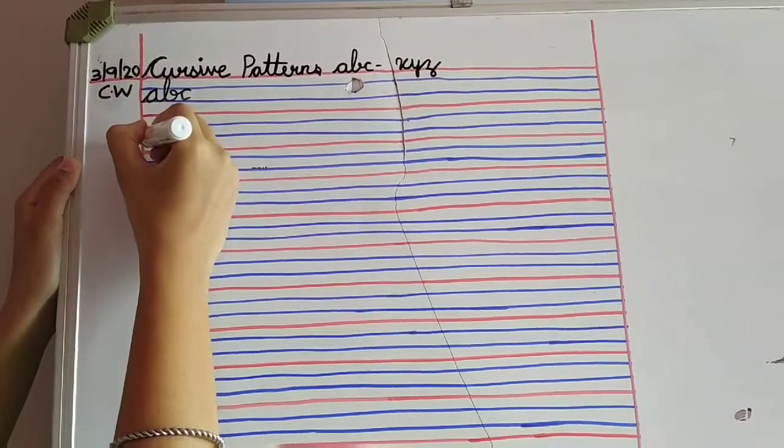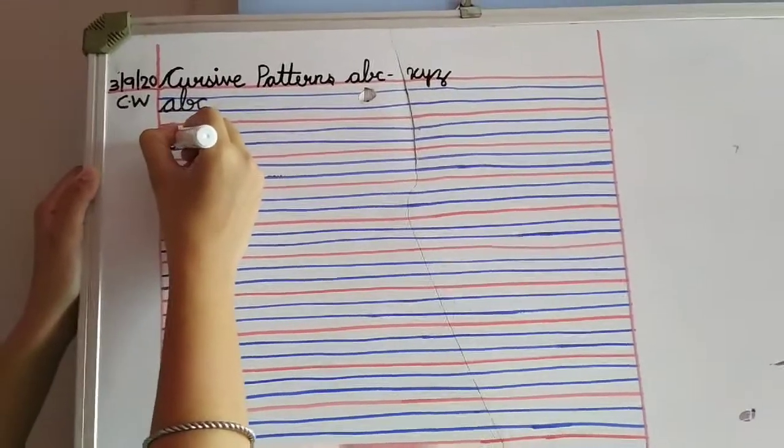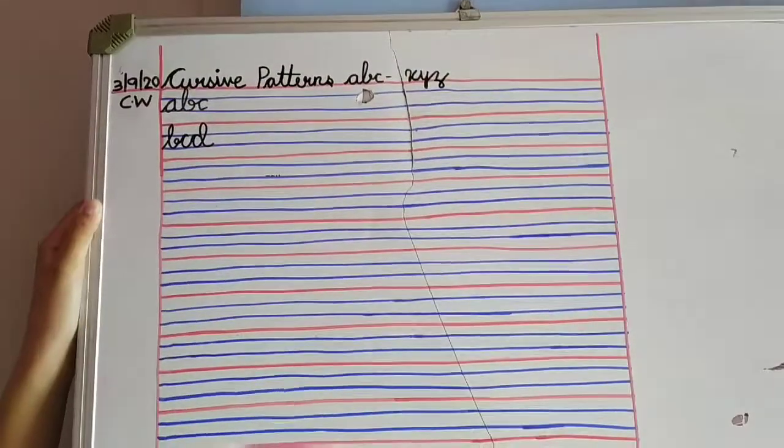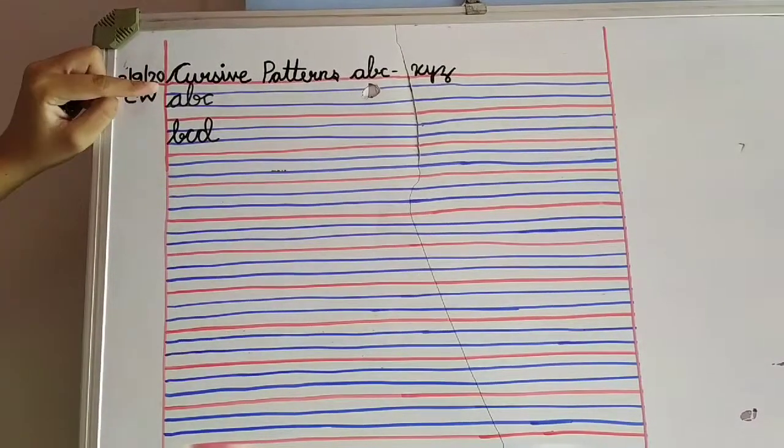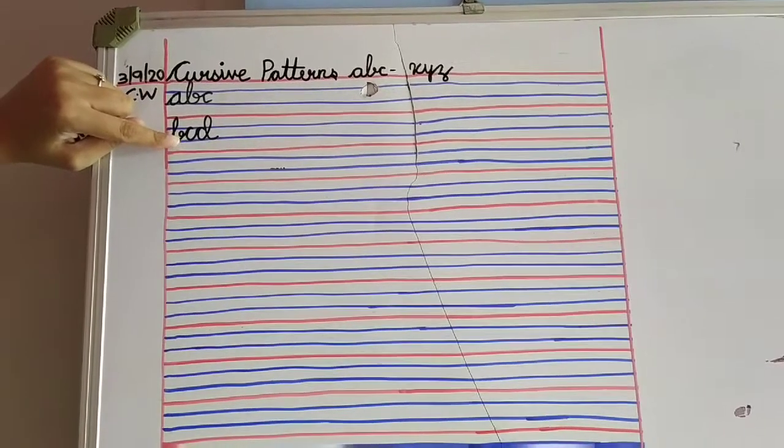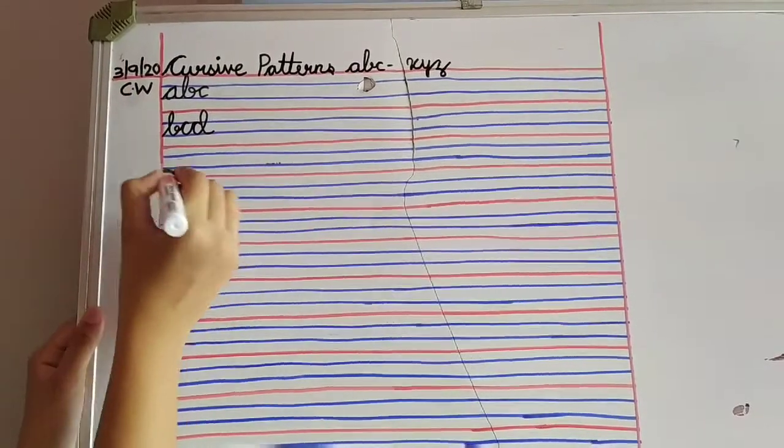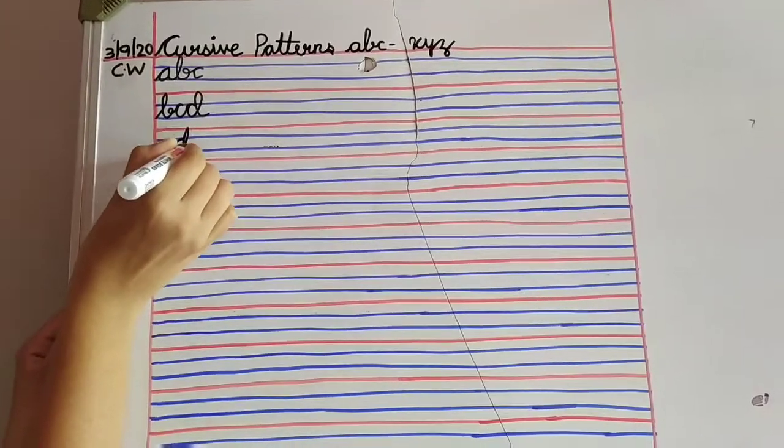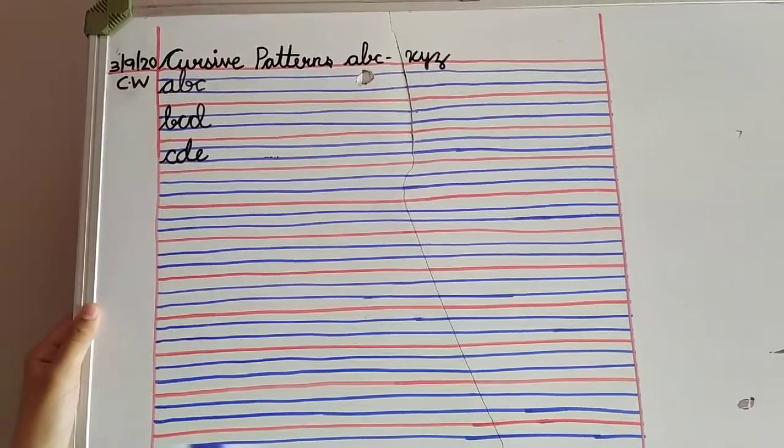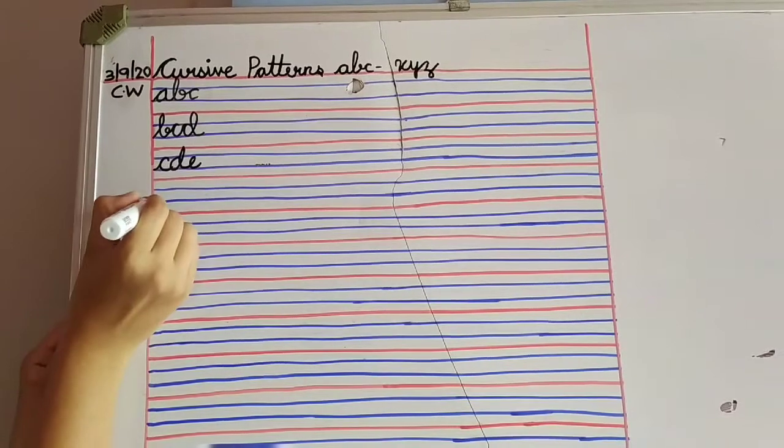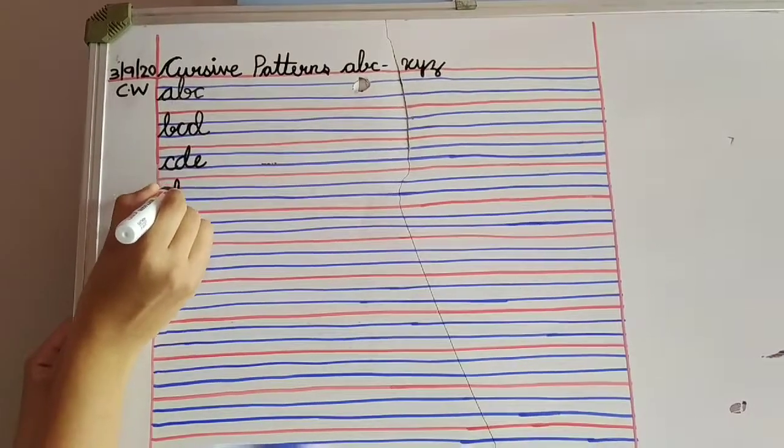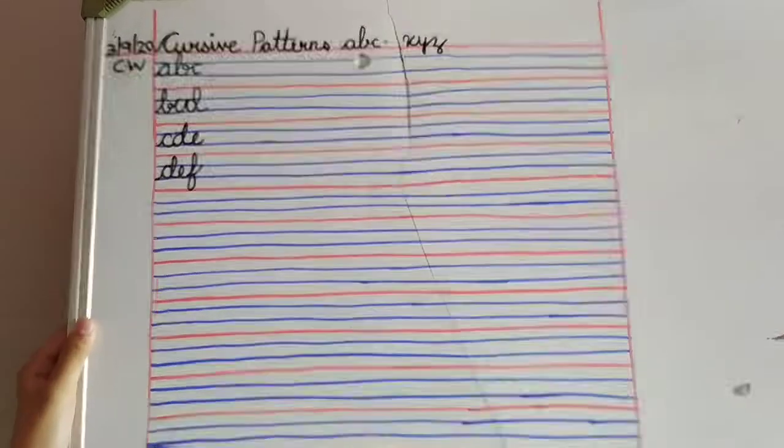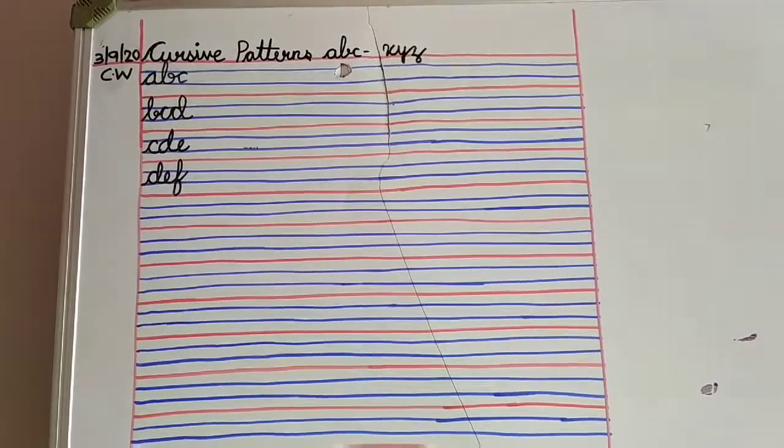So, let's write. Second letter will be B. Next will be B-C-D. Next, here we can see second letter is C. So we will start with C-D-E. Next, D-E-F. Keep practicing this. I hope you are practicing.